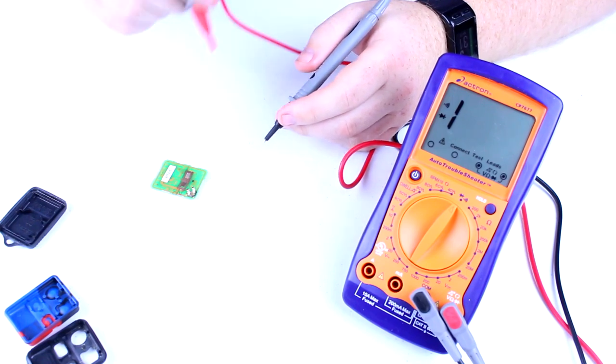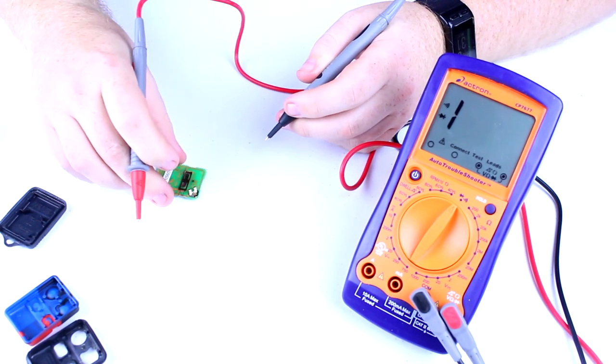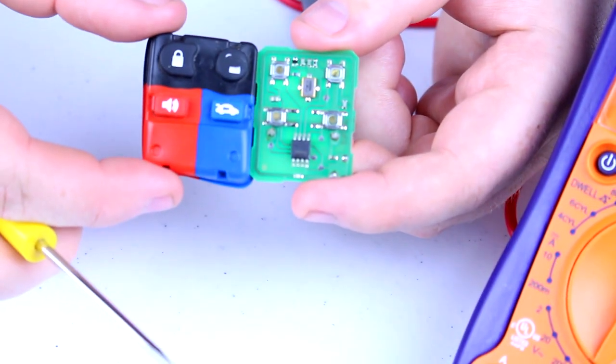Now I'm just gonna do a simple check for continuity through this board. It's gonna make that sound when there's continuity. These dots here are your buttons. You can tell which ones are which by lining it up with this button pad.